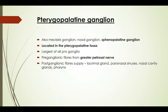Next is the pterygopalatine ganglion, also known as Meckel's ganglion, nasal ganglion, or sphenopalatine ganglion. There are many questions that ask about the sphenopalatine ganglion — don't be confused, it's the same as the pterygopalatine ganglion. It is located in the pterygopalatine fossa, and it is the largest of all the four parasympathetic ganglia.